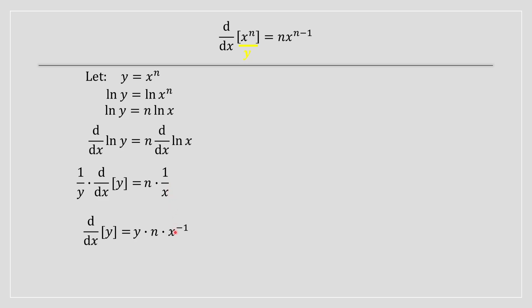1 divided by x can be rewritten as x to the power of negative 1. We then replace y with x to the power of n, which comes from our original equation stated from the beginning.